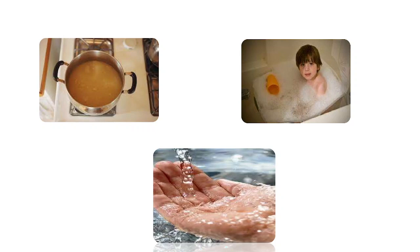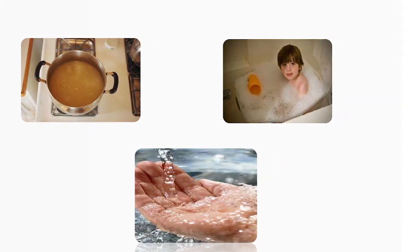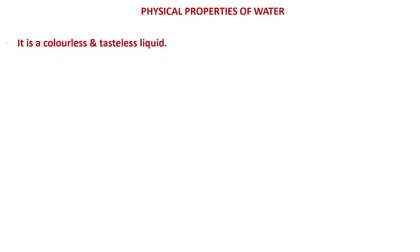We also use water in cooking and washing. Most importantly, water is present on Earth and makes life possible on this planet. Now let us discuss the chemistry aspect of water. In physical properties of water, we need to know how it looks and how it smells. The first physical property is that water is a colorless and tasteless liquid.